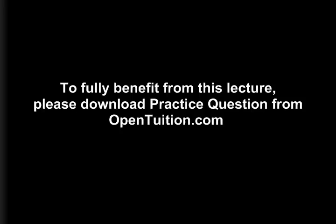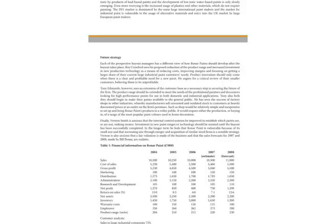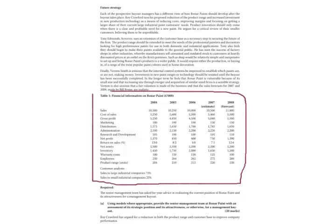Now we're going to look at a question called Bona Paint. This is very typical of the long Part A case study. This question has two pages of information, and note that it has a substantial amount of numerical data. This data is bound to be useful and must not be ignored. Even if the question asks you to look at the strategic position and doesn't mention the financial position, you must understand that you can't properly assess a strategic position without looking at the financial position.